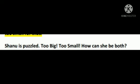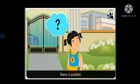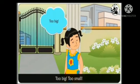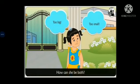Shani is puzzled. Too big, too small — how can she be both? Puzzled means not sure about what is right and what is not. Some of her family members tell her that she is too big and some say that she is too small. How can she be both?